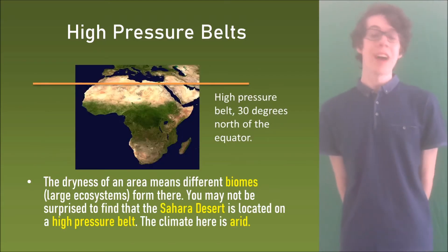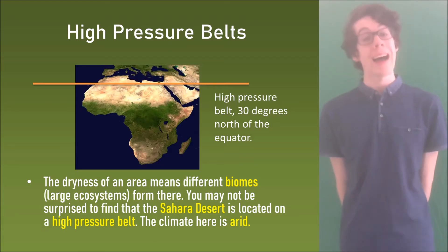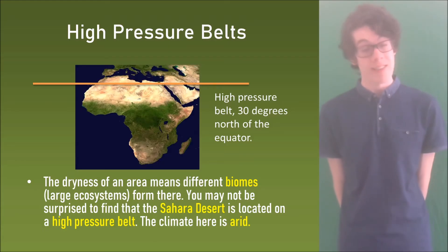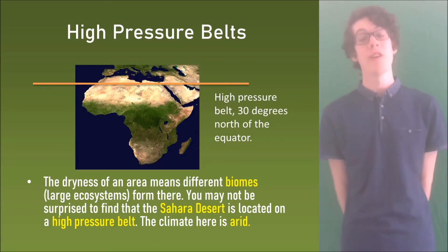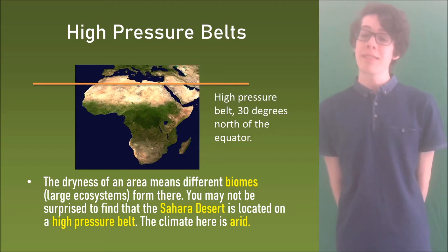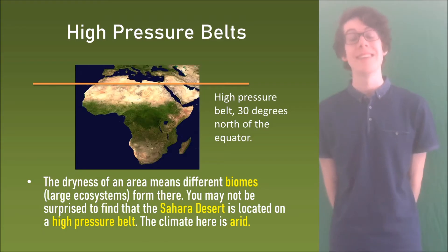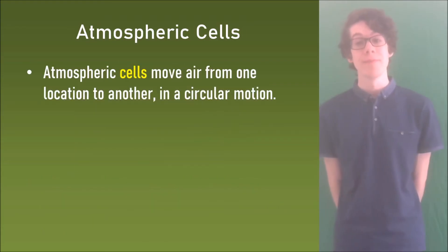The dryness of an area means different biomes — another word for large ecosystems — form there. You may not be surprised to find that the Sahara desert is located on a high pressure belt; the climate is arid.